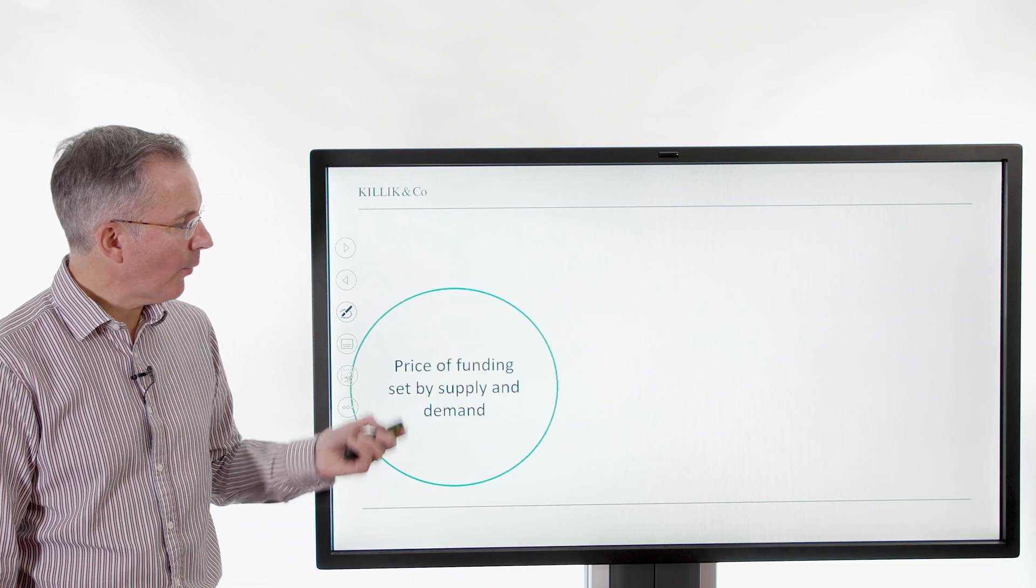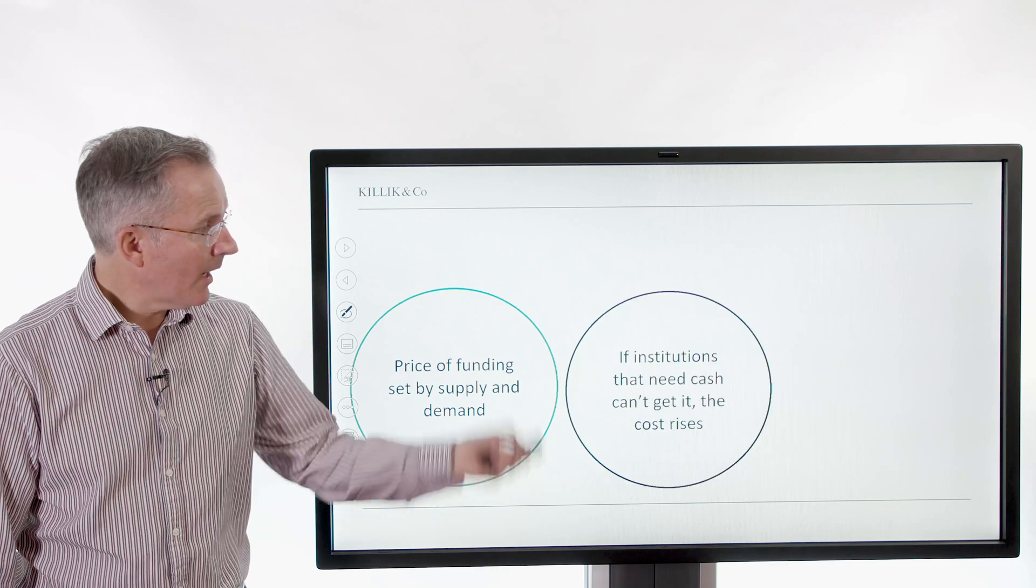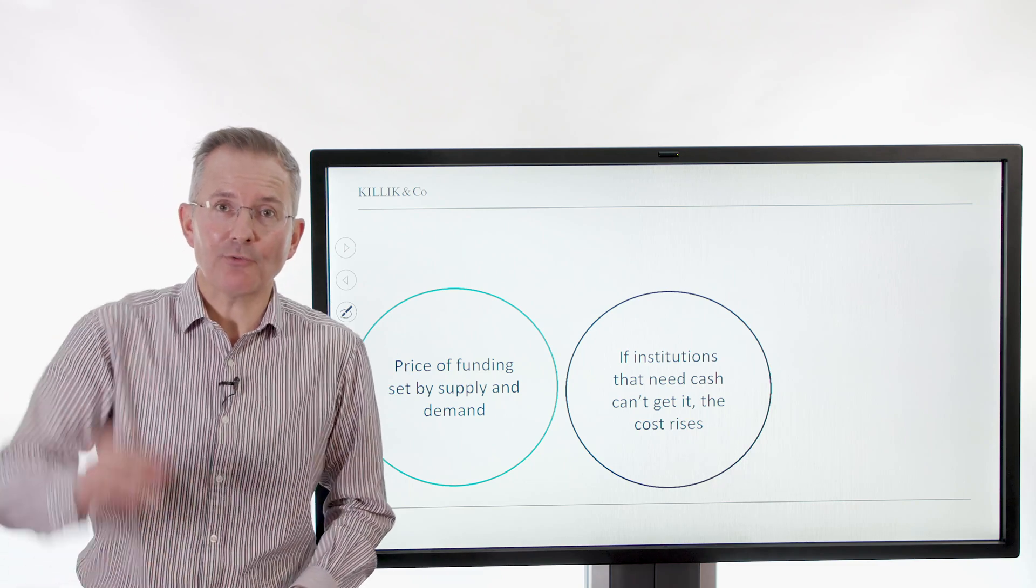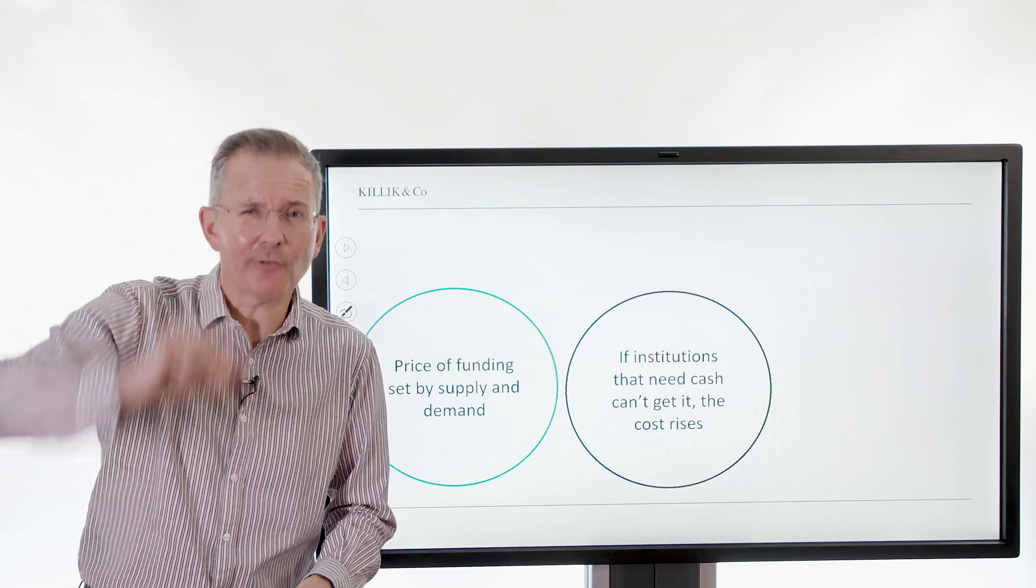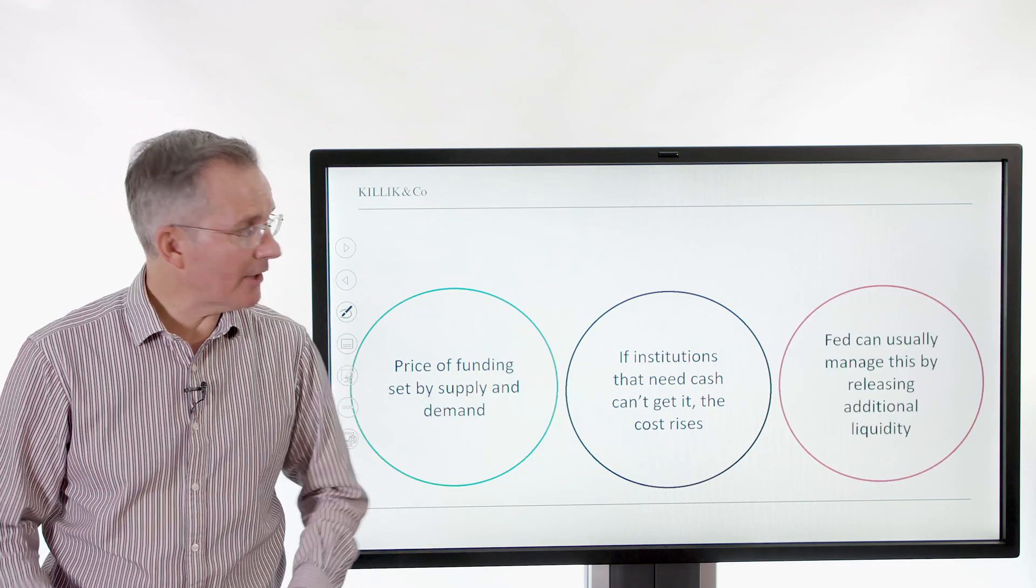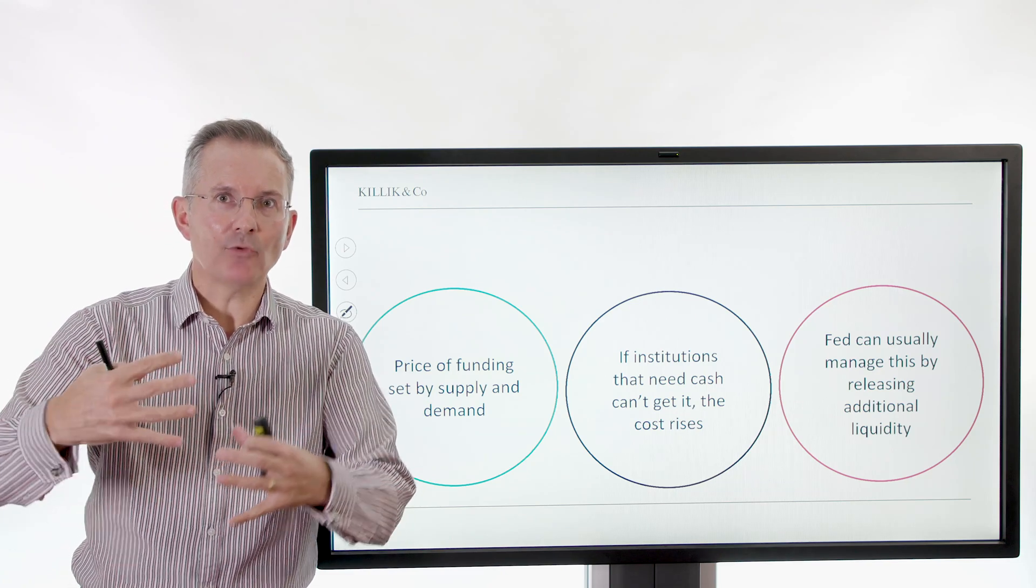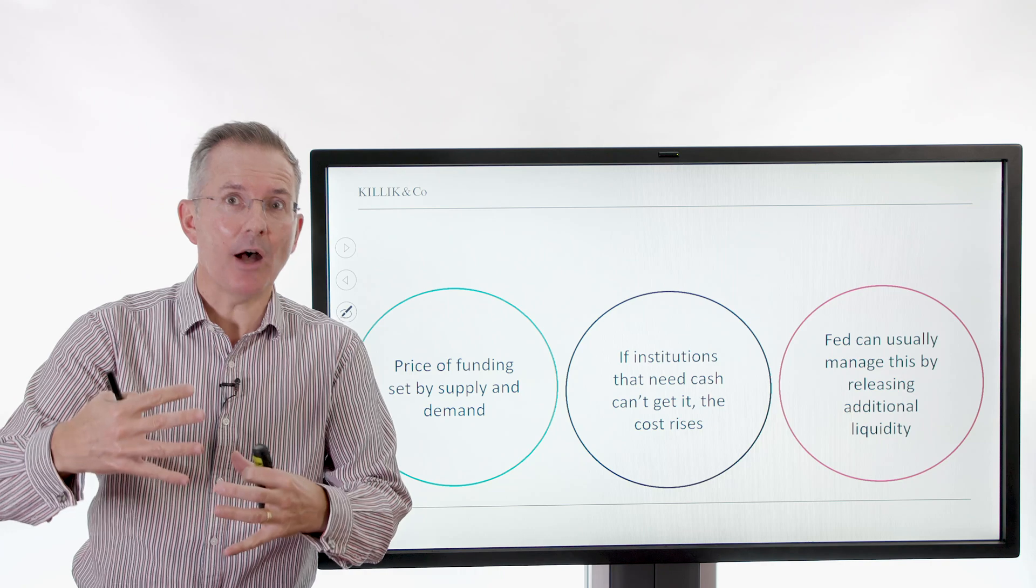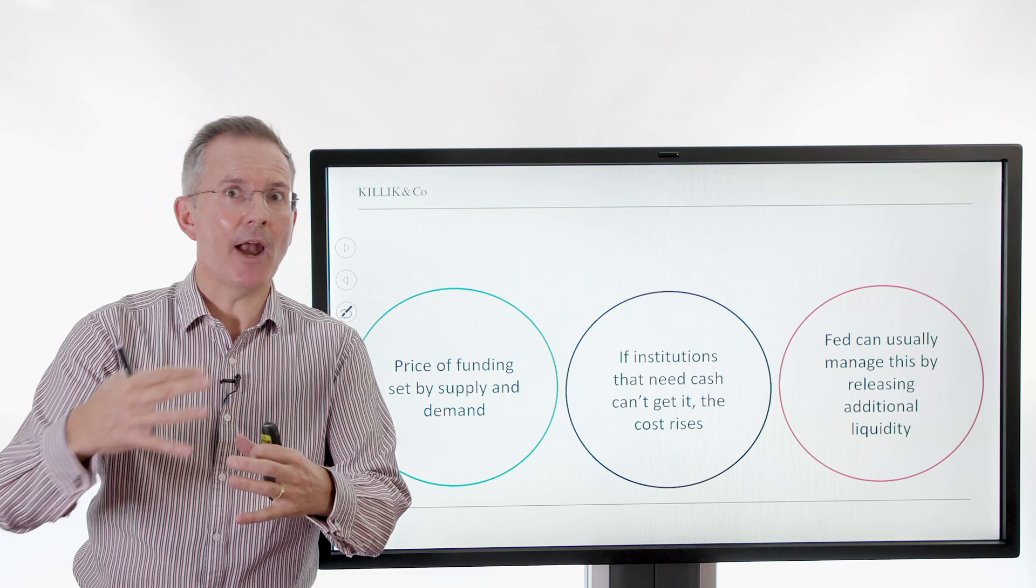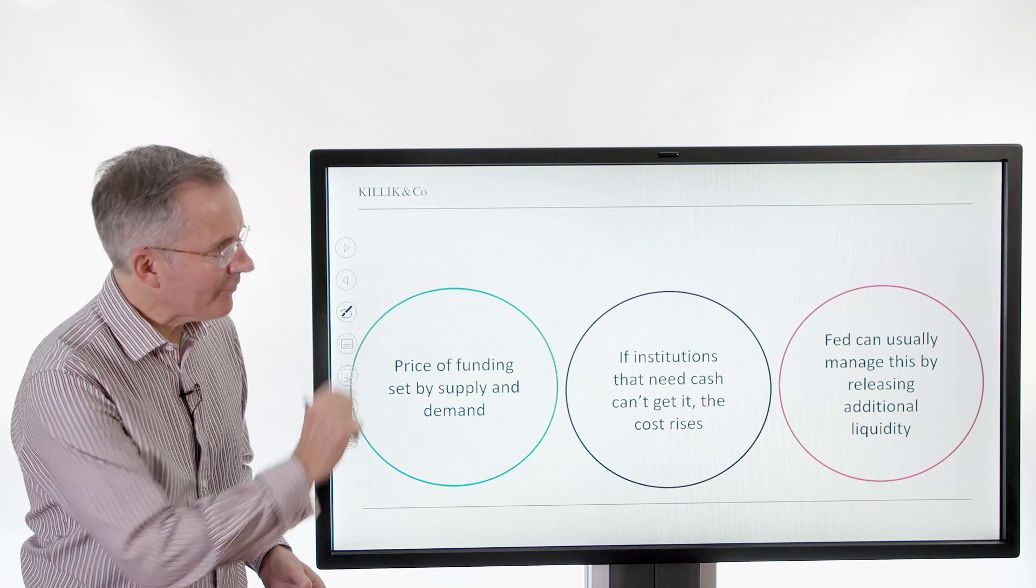So how's that Fed intervention work? Well, the price of funding is set by supply and demand in the repo market like it is anywhere else. If institutions that need cash can't get it, then the cost rises. That's reflected in the repo rate. It can be very small changes, but you get the idea for new people to this market. And the Fed can usually manage this by releasing additional liquidity. The Fed can manage how that rate changes. Normally it doesn't change very much, frankly, by increasing the amount of liquidity in various forms that it allows into the market. So that is the mechanism.